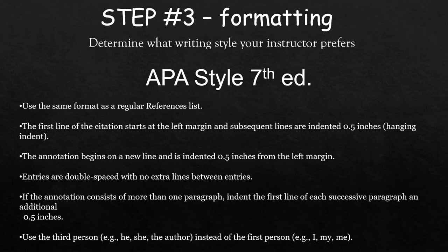By the third step, you've already evaluated your sources and written your annotation, so now it's time to figure out how to format your annotated bibliography. The first thing you need to do is find out which writing style your instructor requires. If it's for a social science project, it will most likely be APA style. You can refer to the ERC's APA Style 7th edition library guide to learn more about APA.